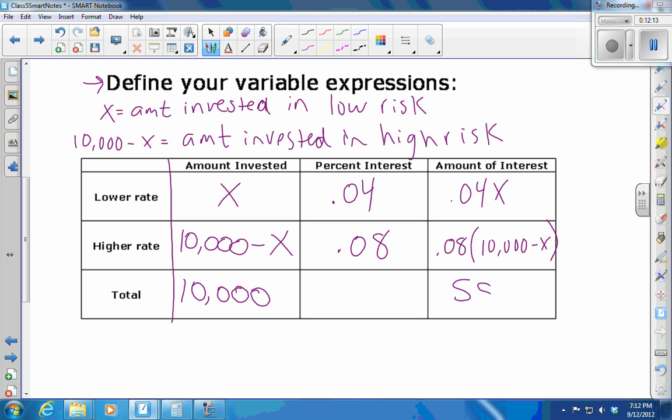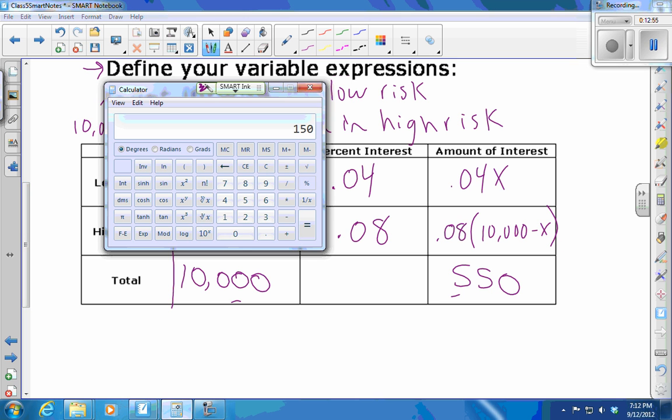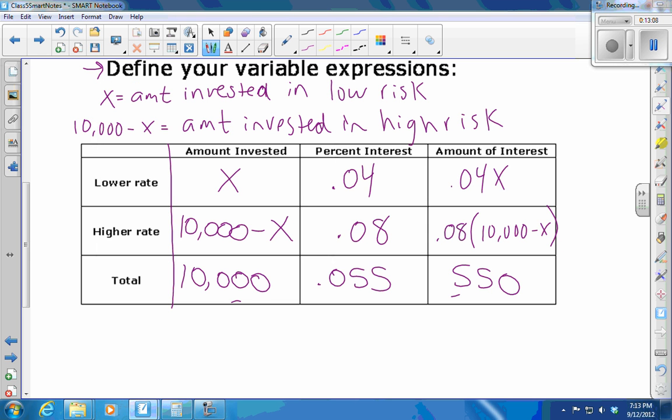How much interest do I want to earn on the total? $550. So if I wanted the percentage, I would say this number over this number, and it comes out to 5.5%, which is 0.055. So all the information is in the table.